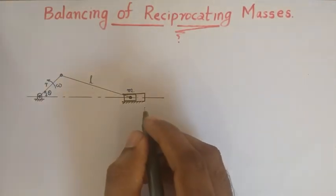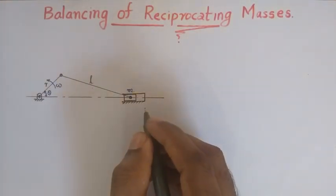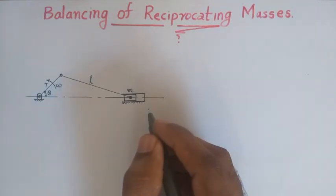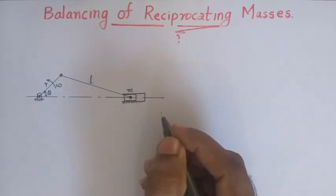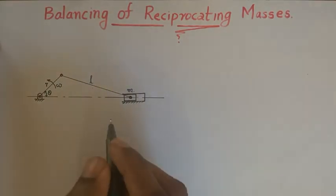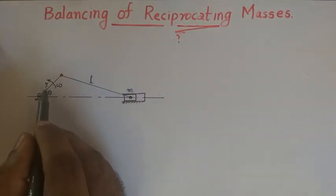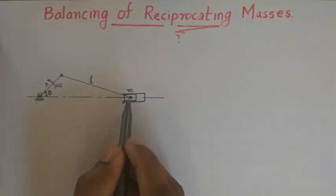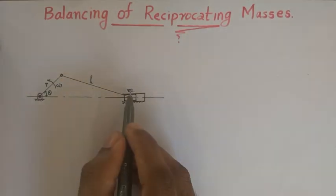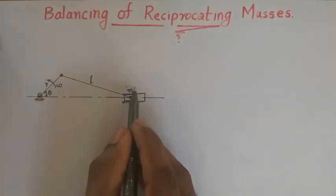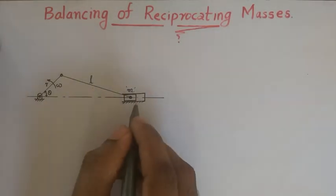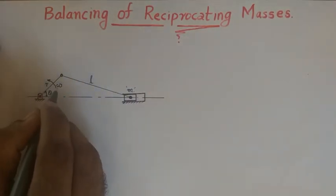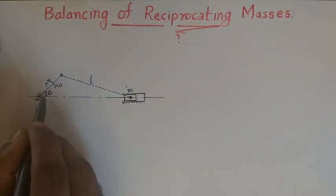Welcome back to another lecture on the balancing of reciprocating masses. We have already conducted both static and dynamic balancing of rotating masses. Here we will be studying the balancing of reciprocating masses. We can see a slider-crank mechanism where the crank has length R and connecting rod length L, attached to a slider. The slider or reciprocating mass has mass M, and the crank is rotating anticlockwise with angular velocity Omega.